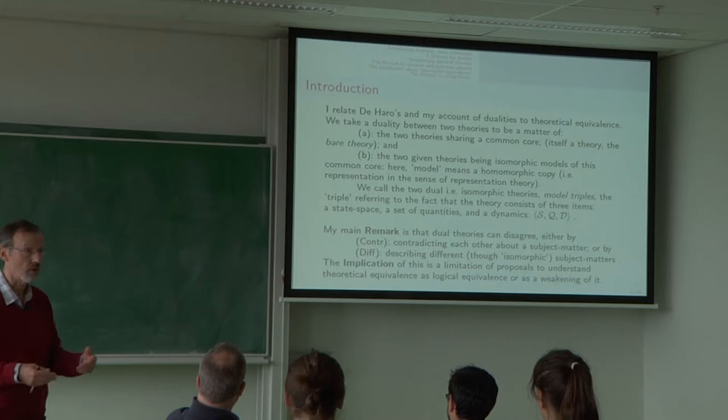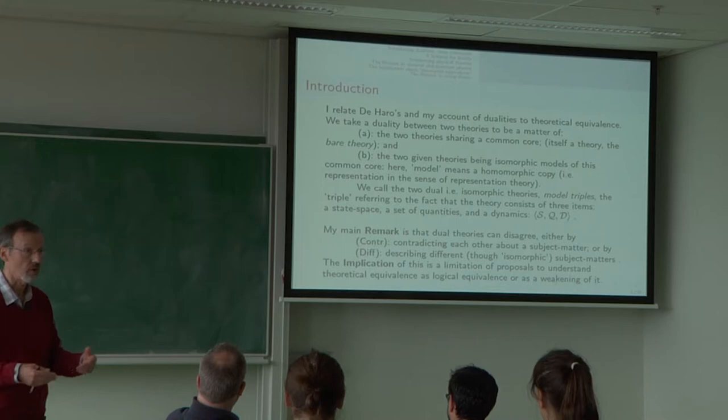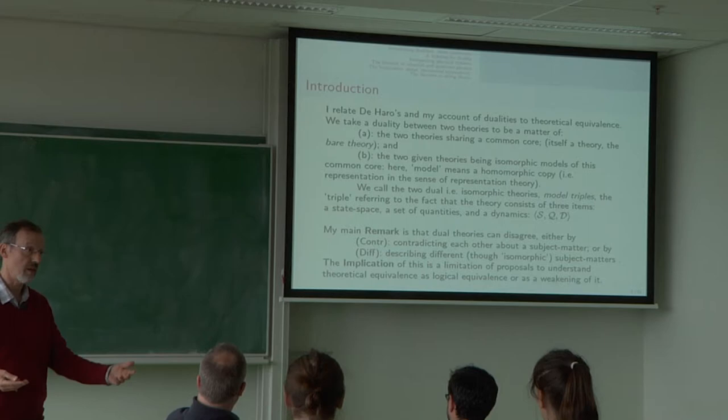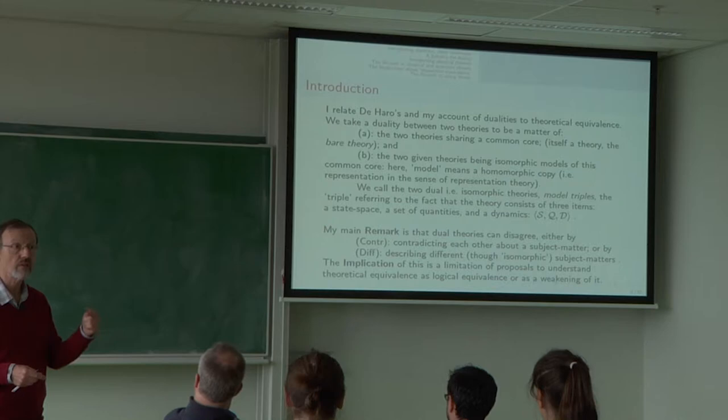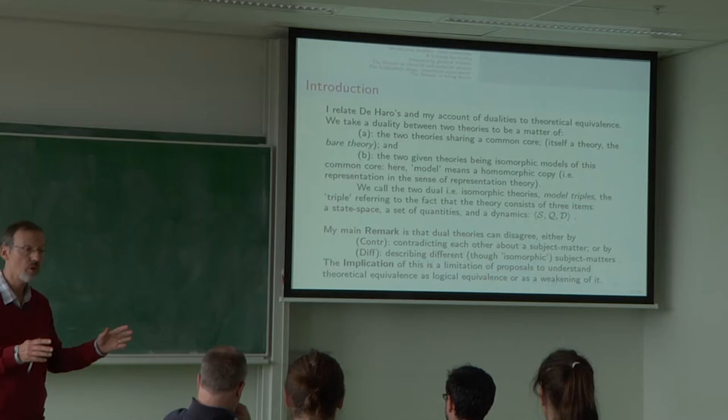One is that they are about the same topic, but they make contradictory claims. Topic, I will use the word subject matter for that. And contra is short for contradiction. But another way they can differ is by having different topics, different subject matters. So they can both be true, but they are making different claims about the world. The sky is blue, the grass is green, they're both true, they're different, they make different claims, they have different subject matters.